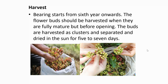Harvest will start from the sixth year onwards. The flower buds should be harvested when they are fully mature but before opening. The buds are harvested as clusters, separated, and dried in the sun for five to seven days.